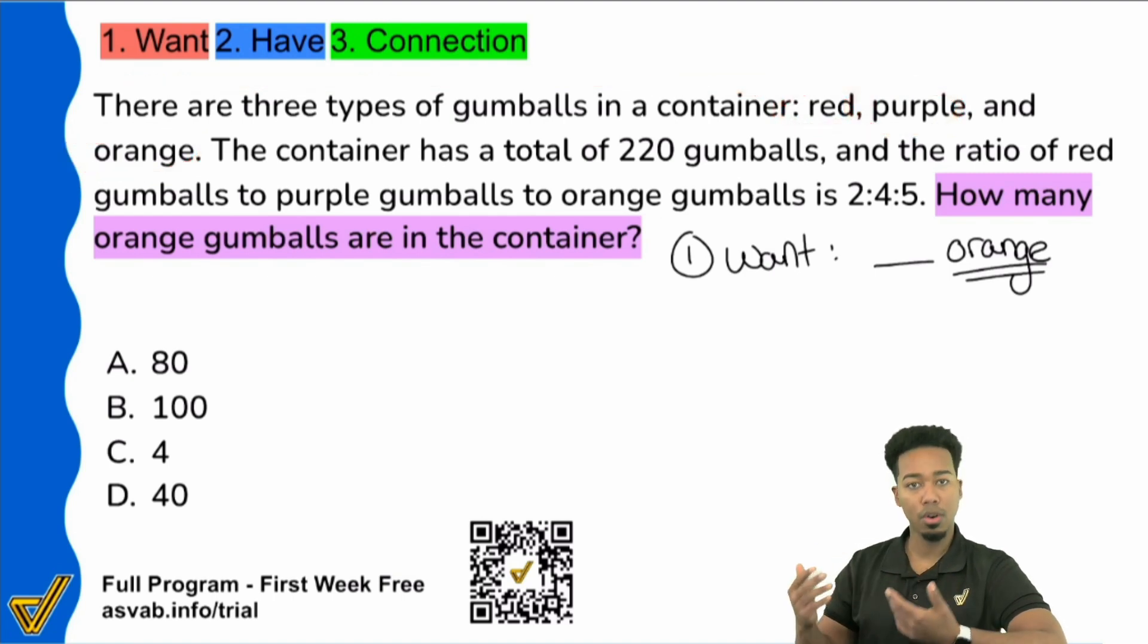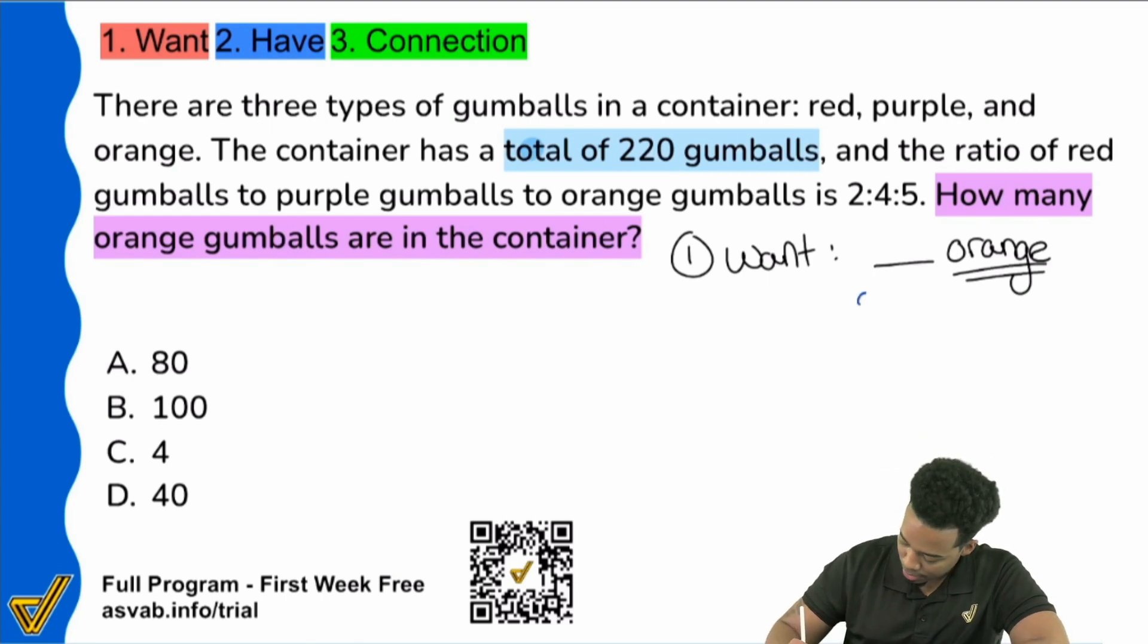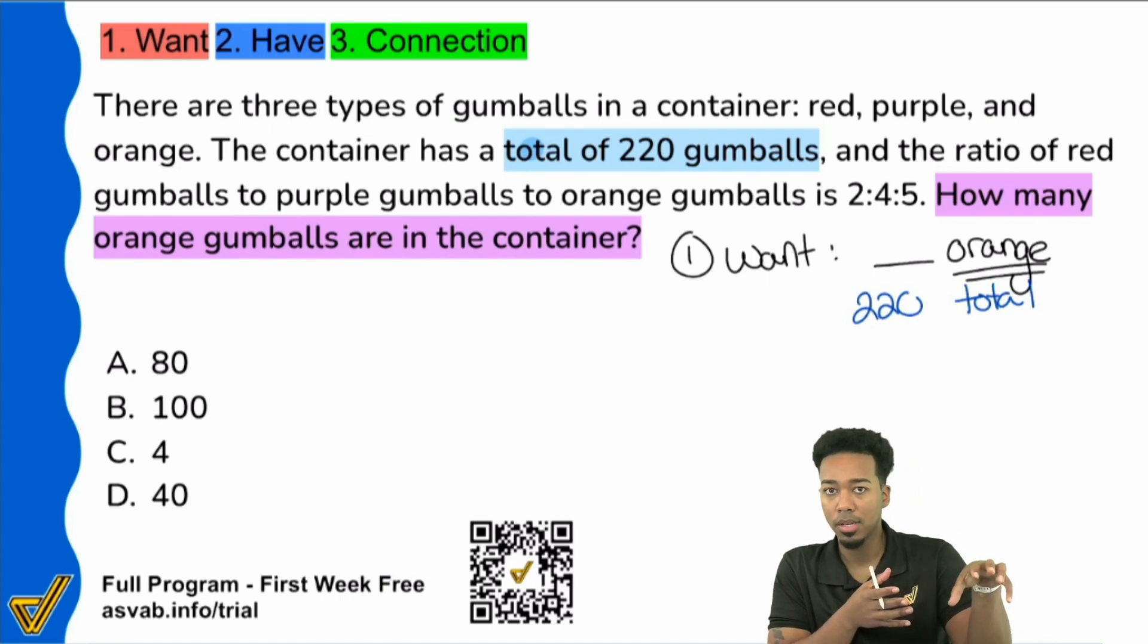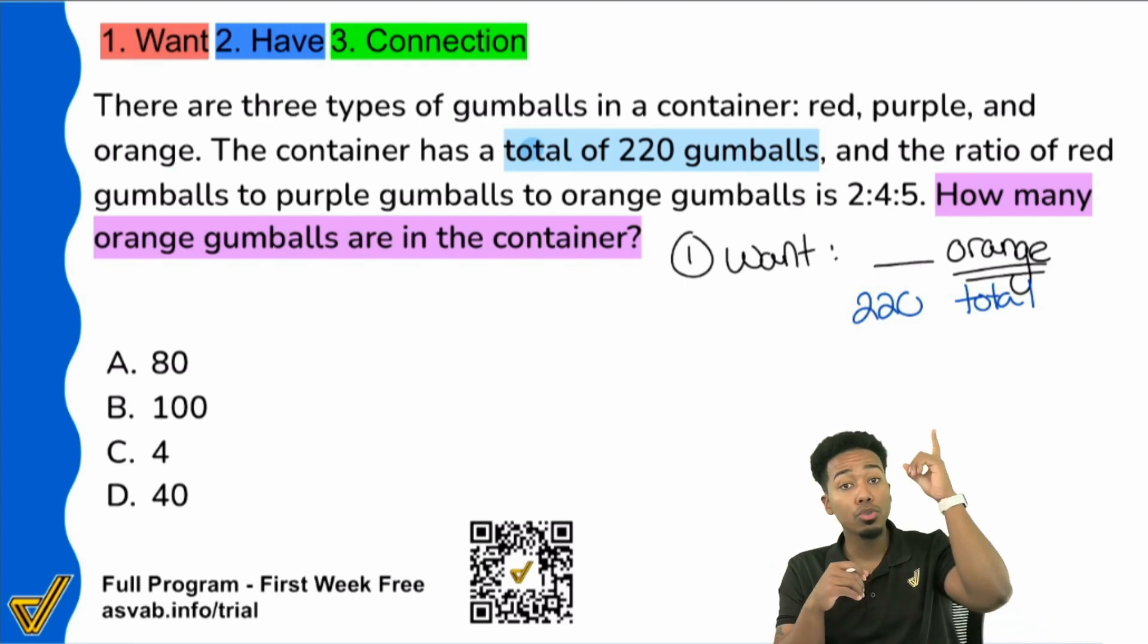Okay, we know that there are red, orange, and purple. Cool. Sounds good. It says the container has a total of 220 gumballs. Okay. So although we're looking for the number of orange, it does tell us that we have a total of 220 gumballs. So let me write that down right here: 220 total. Now, the reason I wrote that right below this is because we're looking for the actual number of orange gumballs, and we're told that there are 220 actual gumballs total. So those two things are related. The number of orange and the total number, those are related in that sentence.